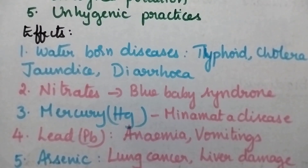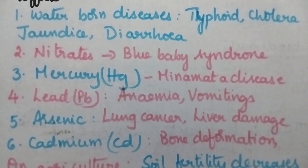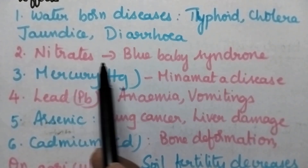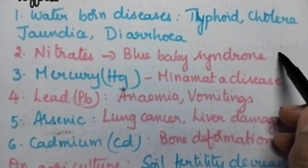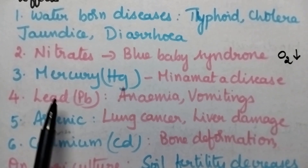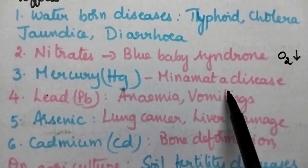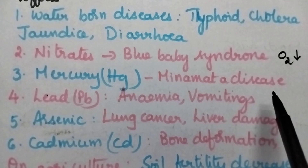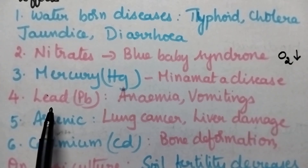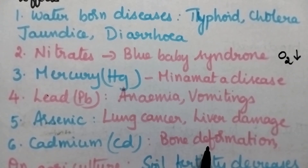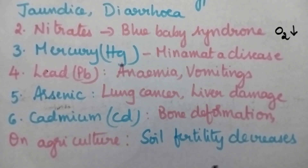Effects of water pollution include waterborne diseases like typhoid, cholera, jaundice and diarrhea. If nitrates are present in the water body, it causes blue baby syndrome, meaning the supply of oxygen will be decreased. The presence of mercury causes Minamata disease, first found at Minamata Bay. The presence of lead causes anemia and vomiting. Arsenic causes lung cancer and liver damage. Cadmium is responsible for bone deformation and hypertension. Effects on agriculture include a decrease in soil fertility.